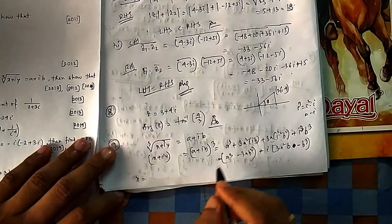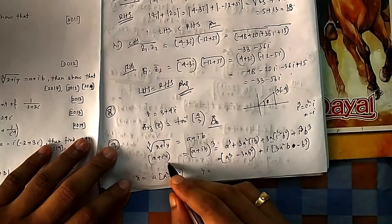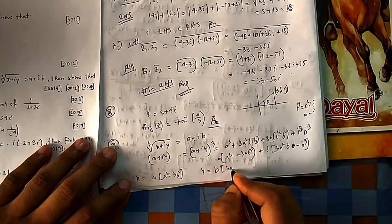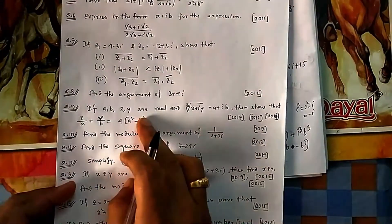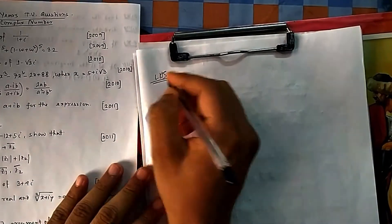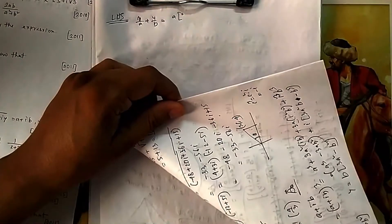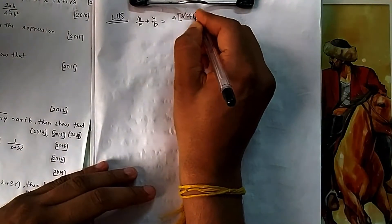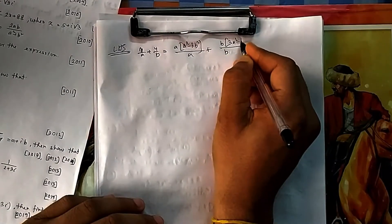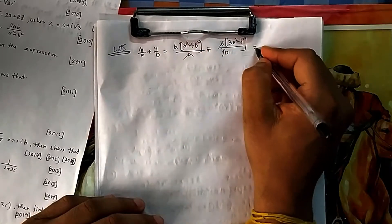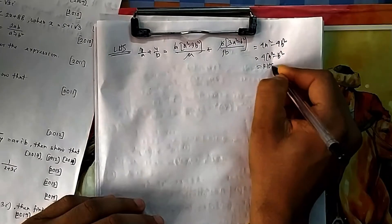Equating real parts: x = a(a²−3b²), so x/a = a²−3b². Equating imaginary parts: y = b(3a²−b²), so y/b = 3a²−b². Now compute x/a + y/b: (a²−3b²) + (3a²−b²) = 4a²−4b² = 4(a²−b²), which is the RHS. So the identity is proved.